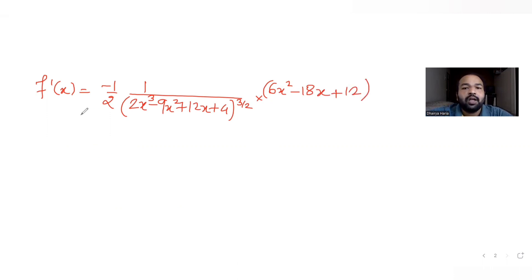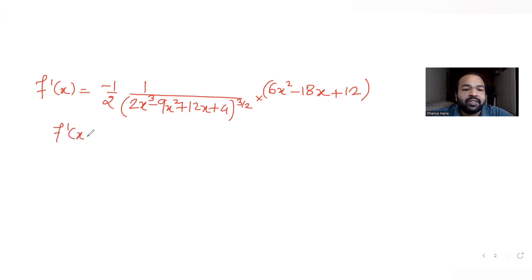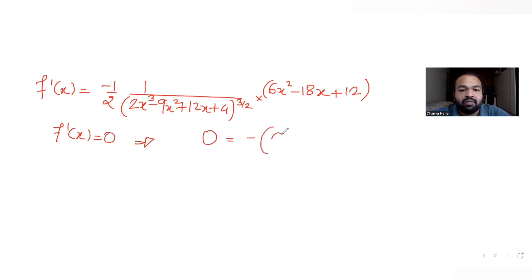To find the minimum or maximum value, or to understand if the function is increasing or decreasing, we put f'(x) equal to 0. Setting f'(x) = 0, we get: minus (6x² minus 18x plus 12) divided by 2·(2x³ minus 9x² plus 12x plus 4)^(3/2) equals 0.